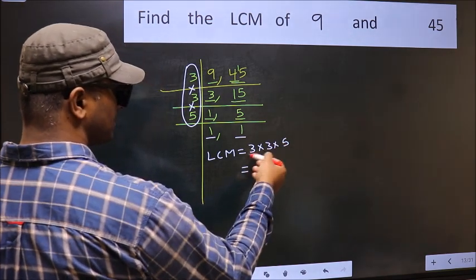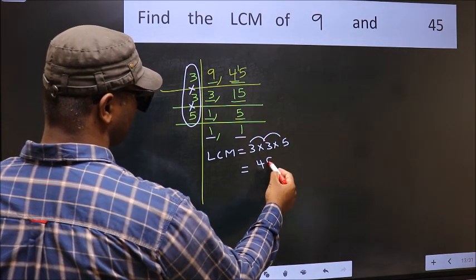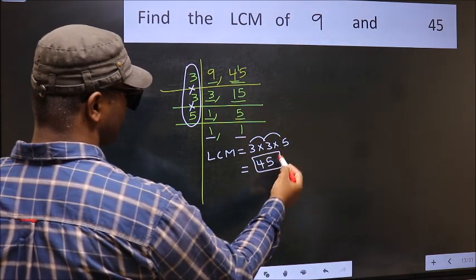Let us multiply these numbers. 3 times 3 is 9, times 5 is 45. 45 is our LCM.